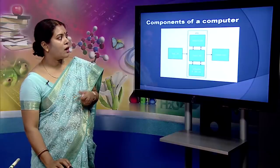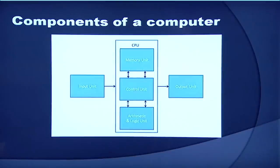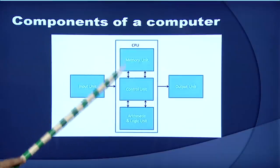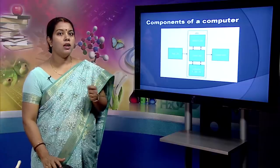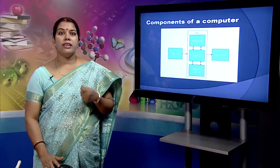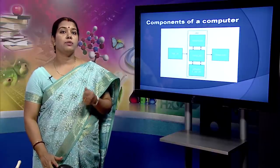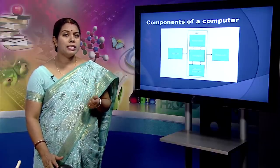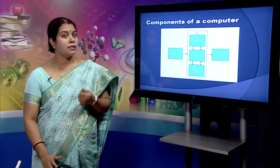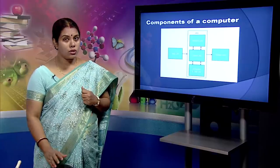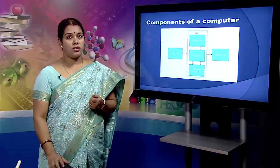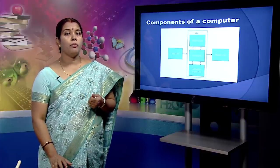Let us go and understand the different main components of a computer. There is an input unit, we have the CPU, and we have an output unit. The CPU has got a memory unit, control unit and arithmetic logic unit. The input unit contains devices with the help of which we enter data into the computer. This unit makes a link between the user and the computer. The input devices translate information into the form understandable by the computer. The CPU is considered as the brain of the computer and performs all types of data processing operations. It stores data, intermediate results and instructions in the form of programs, and controls the operation of all parts of the computer.